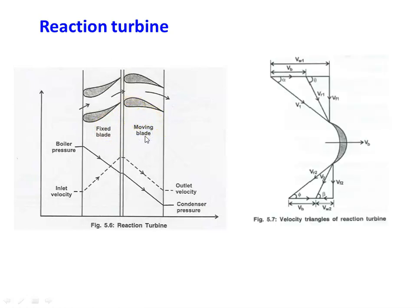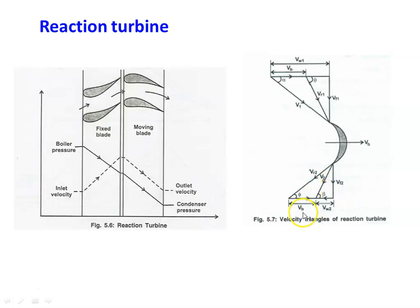The velocity triangle is very similar to the previous one and must be drawn carefully. The variables are: absolute velocity, tangential velocity, flow velocity, relative velocity; theta is the blade angle at inlet, alpha is the nozzle angle, phi is the blade angle at the outlet, beta is the angle of velocity v2; vf is flow velocity, vr is relative velocity, and vb is blade velocity. The velocity triangle is very similar to the impulse turbine.